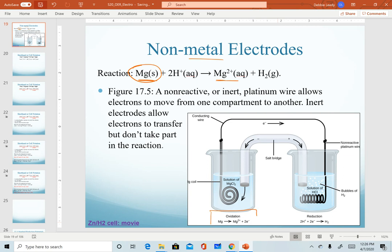In the drawing down here, magnesium is in our left compartment, and so this piece of wire that then gets coiled into solution is pure magnesium metal.